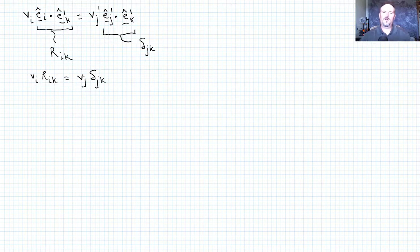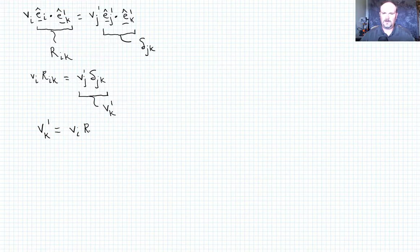Okay, so we know that the Kronecker delta only has a value, and its value is one, whenever j is equal to k. And it's zero everywhere else. So this quantity just becomes v sub k prime. Okay, so now we have the equation v_k prime is equal to v_i R_ik. And that's actually, that's the solution.